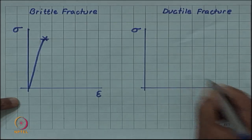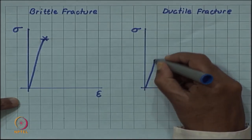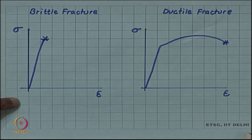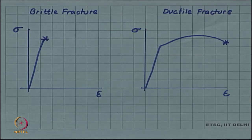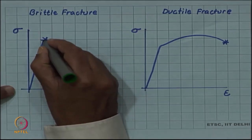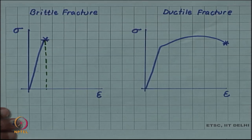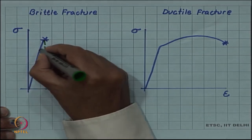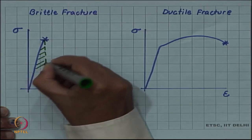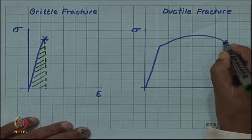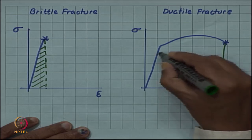Whereas the stress-strain diagram for a ductile material will show significant plastic deformation — there will be a lot of deformation before it fractures. The energy absorbed up to the point of fracture in the stress-strain diagram is given by the area under the curve. Since in brittle fracture this area will be much less compared to that in ductile fracture.